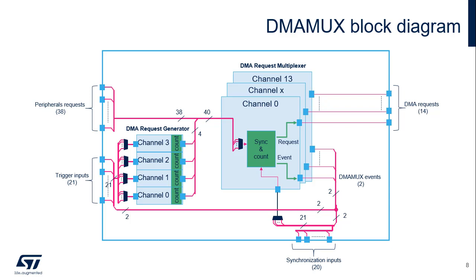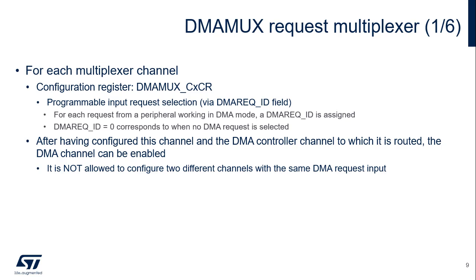Do not confuse DMA request generator channels 0 to 3 with DMA request multiplexer channels 0 to 13. For each multiplexer channel, there is a configuration register DMA-MUX CX-CR with programmable input request selection via the DMA-REQ-ID field. For each request from a peripheral working in DMA mode, a DMA-REQ-ID is assigned. DMA-REQ-ID equals 0x00 corresponds to no DMA request selected. After having configured this channel and the DMA controller channel to which it is routed, the DMA channel can be enabled. It is not allowed to configure two different channels with the same DMA request input.